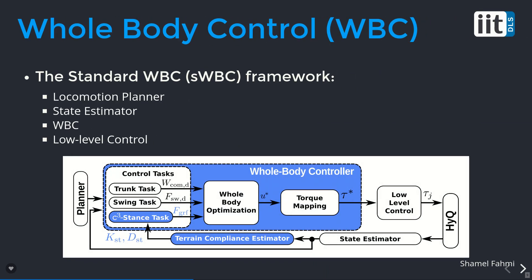Let's start with the whole body controller framework. It consists of a locomotion planner that generates feet and base reference trajectories, and a state estimator that supplies the whole body controller with current estimates of the base and joint states. The whole body controller realizes the reference trajectories from the planner while keeping the robot balanced and respecting the robot dynamics, joint and torque limits, and interaction with the environment. The whole body controller solves for the optimal joint torques that are sent to the lower level control.